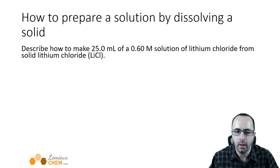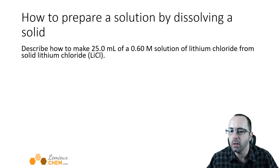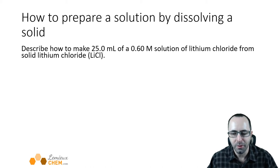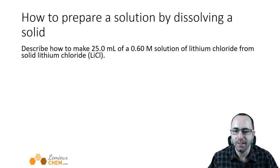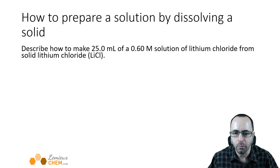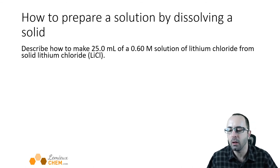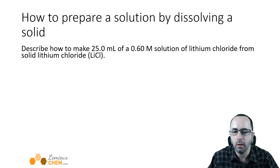Here's an example: describe how to make 25 milliliters of 0.6 molar solution of lithium chloride — LiCl — from solid lithium chloride. Here, we're not going to use M1V1 equals M2V2. What we need to know is how many moles of solid lithium chloride we need. Then we can figure out how many grams of solid we'll have to weigh out to make this solution.